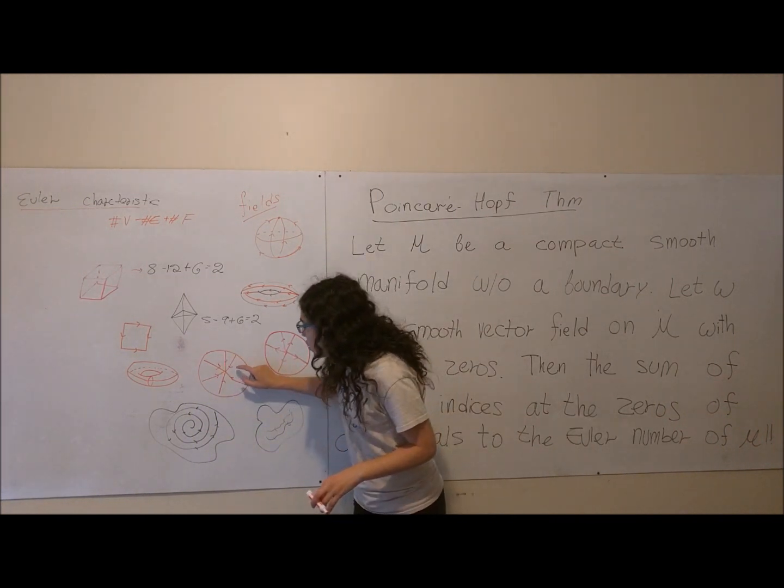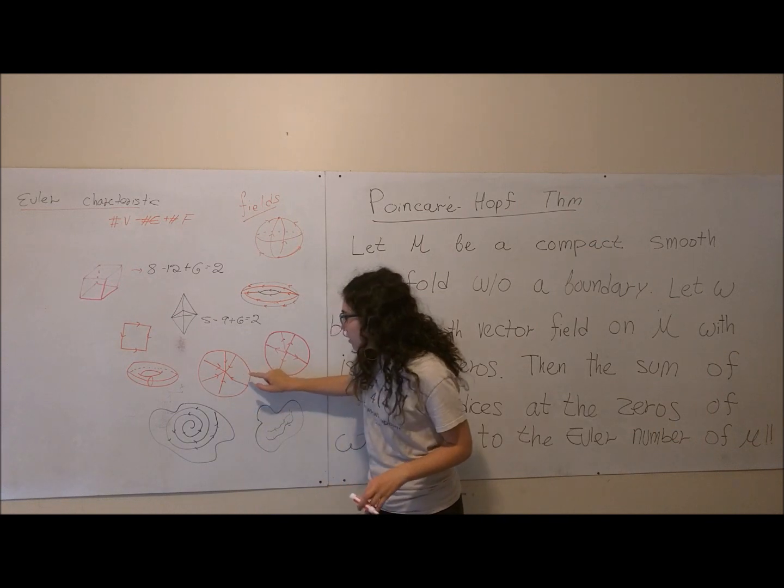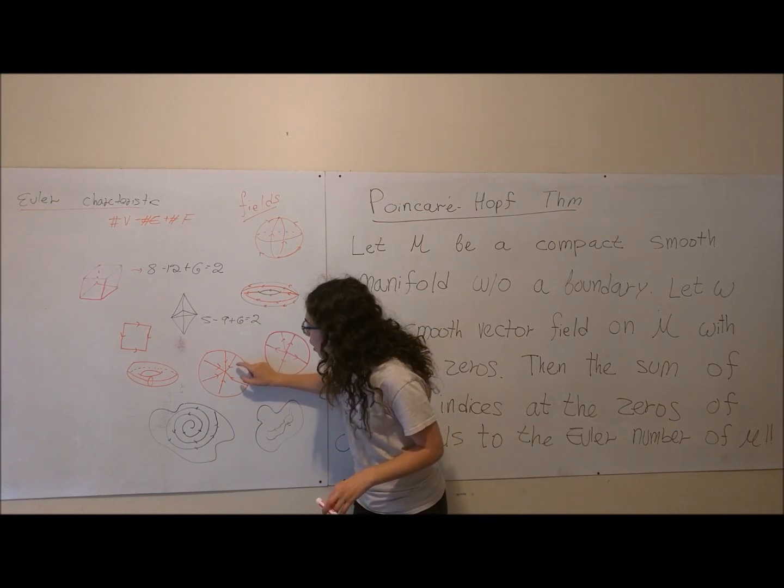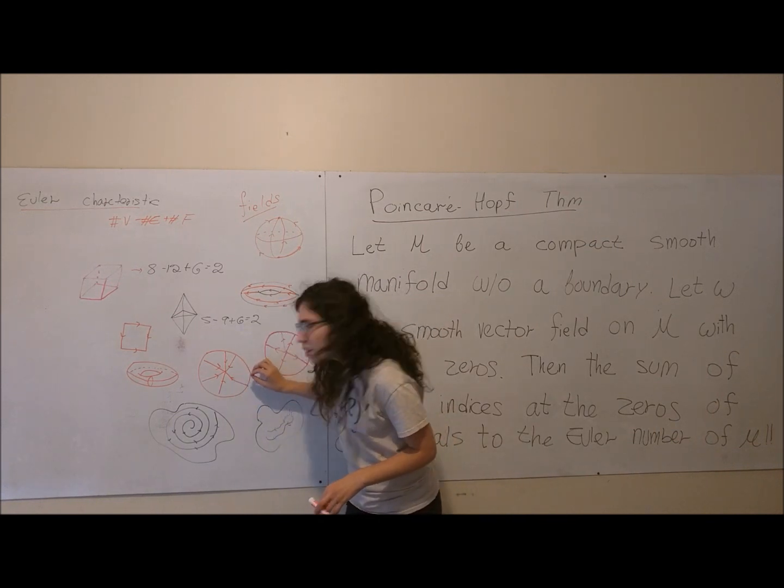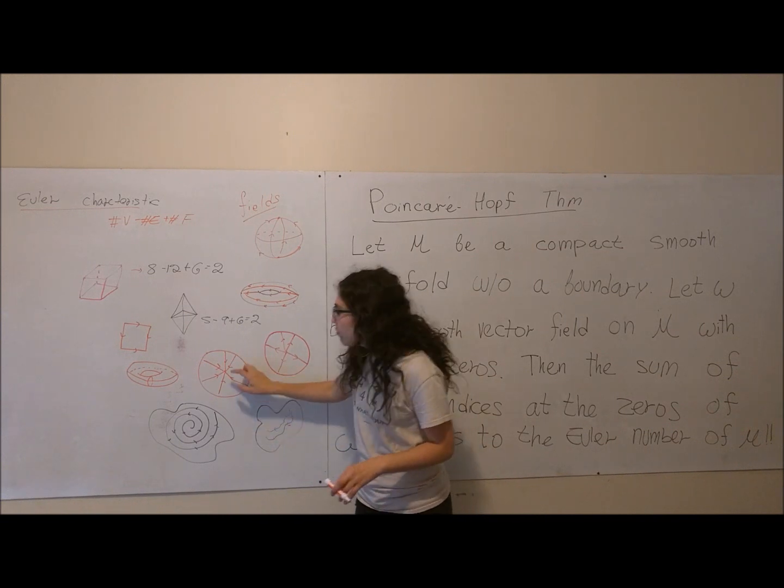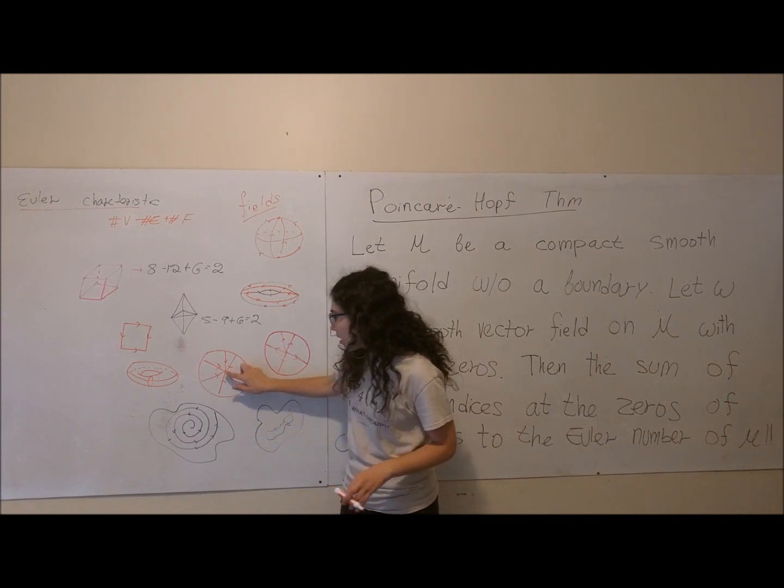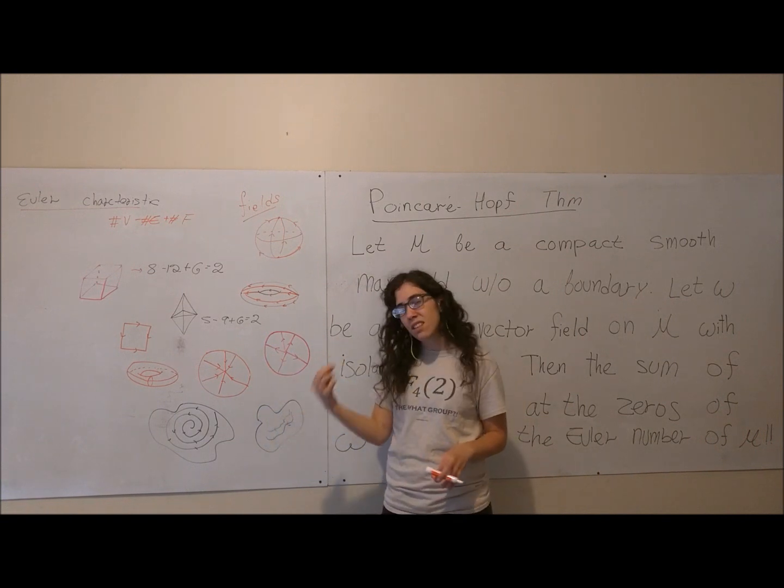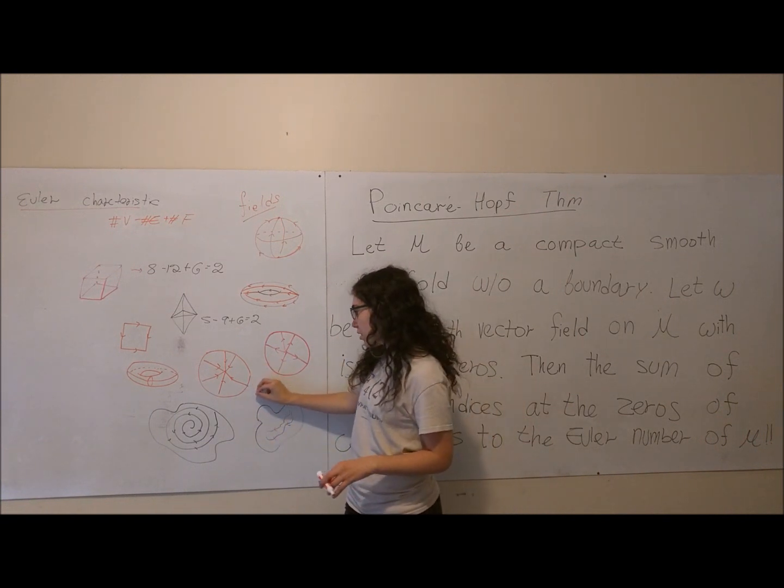Notice that if you, in this case, in this vector field, for example, wherever you are, you're always flowing towards the center. And if you're at the center, you're not moving. So this point here right at the center is the zero of this vector field.